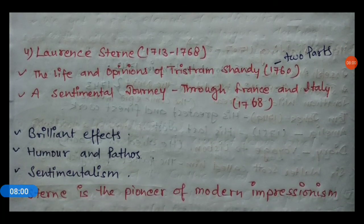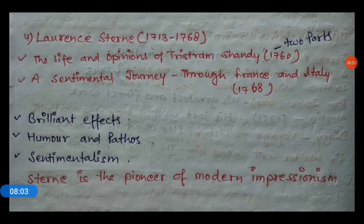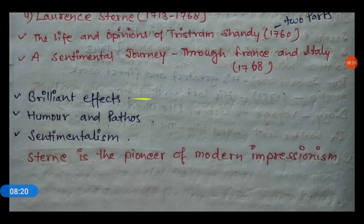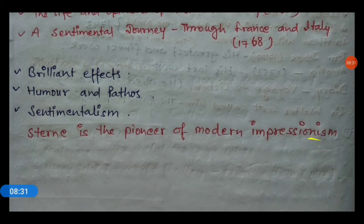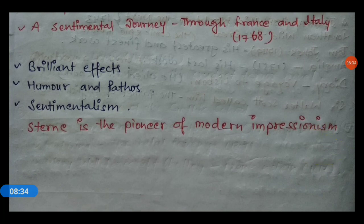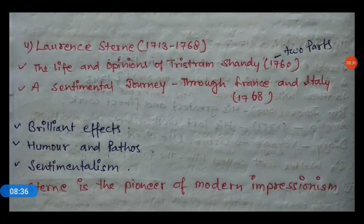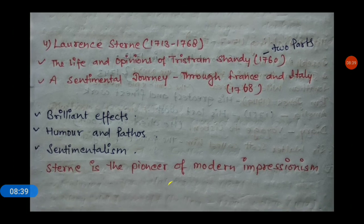The last wheel is Lawrence Sterne, who lived between 1713 and 1768. His works include The Life and Opinions of Tristram Shandy, published in 1760 in two parts, and A Sentimental Journey Through France and Italy in 1768. He used brilliant effects, gay humor, pathos, and sentimentalism in his novels. Sterne is considered the pioneer of modern impressionism.